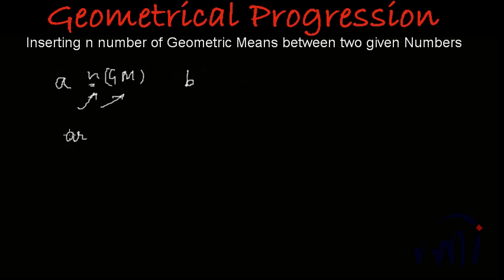So if I want to insert n number of GMs, they will be ar first term multiplied by the common factor, then ar square, ar cube, ar to the power 4 till ar to the power n.